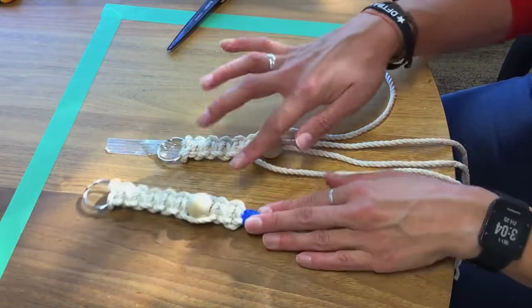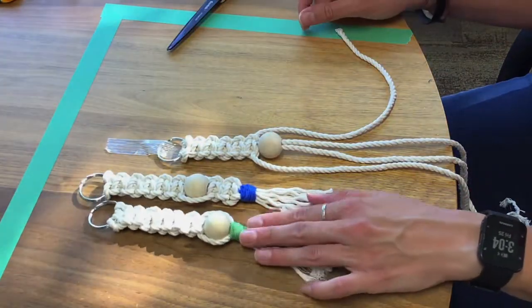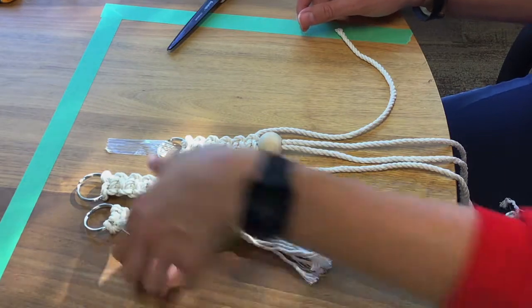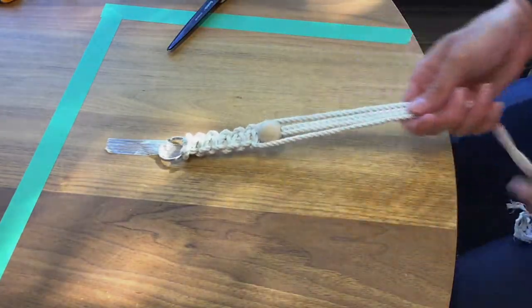Now here you can make the choice to continue making knots past the wooden ball. Or you can end it here and tie everything together. It is completely up to you. With mine I am just going to tie everything together.